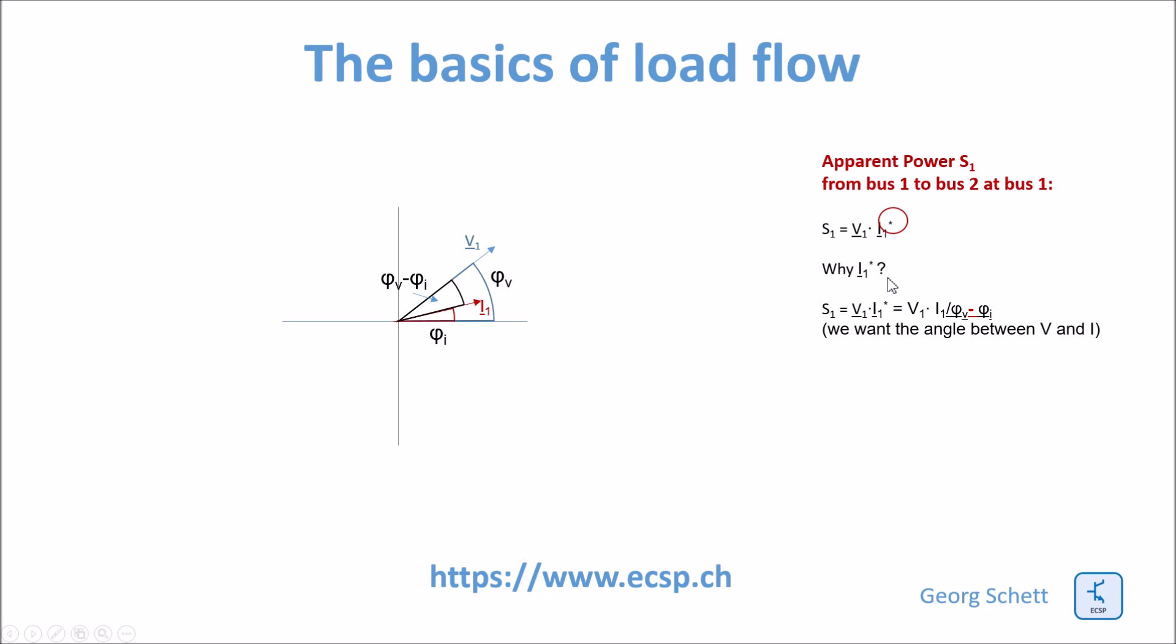So why the hell do we need this conjugate complex? Very simple: because current and voltage are both phasors and the apparent power needs the angle between the current phasor and the voltage phasor. Therefore we need to have conjugate complex, and the conjugate complex format means that we are subtracting the phase angle of the current from the phase angle of the voltage. You can see here. So this was the explanation for this conjugate complex asterisk over here.